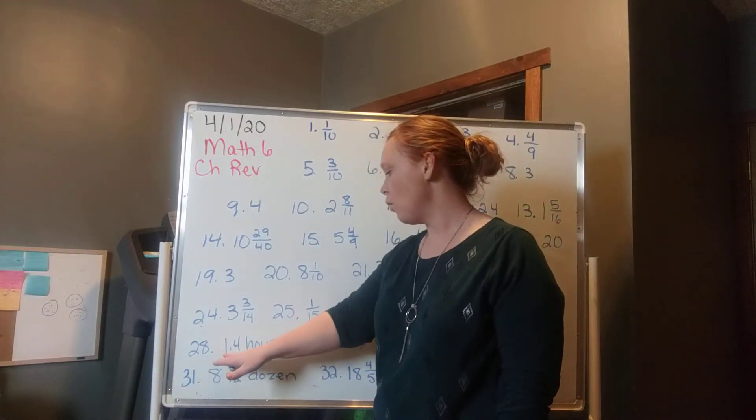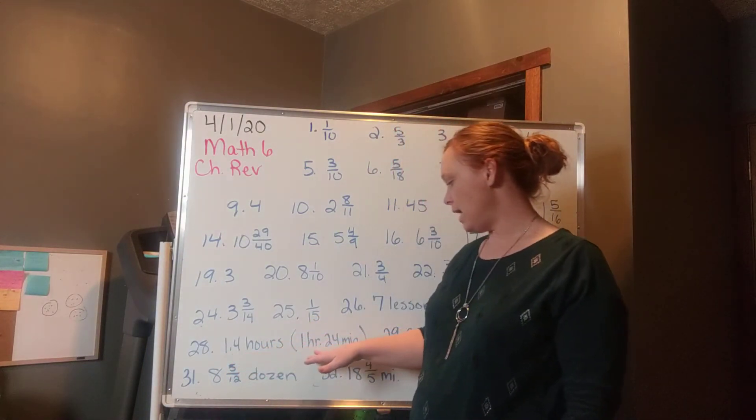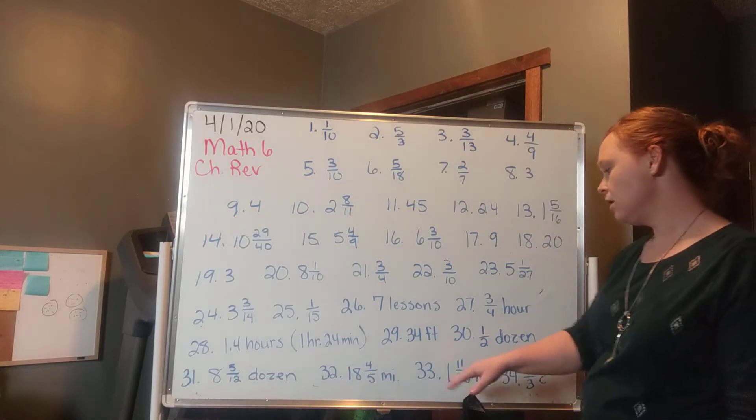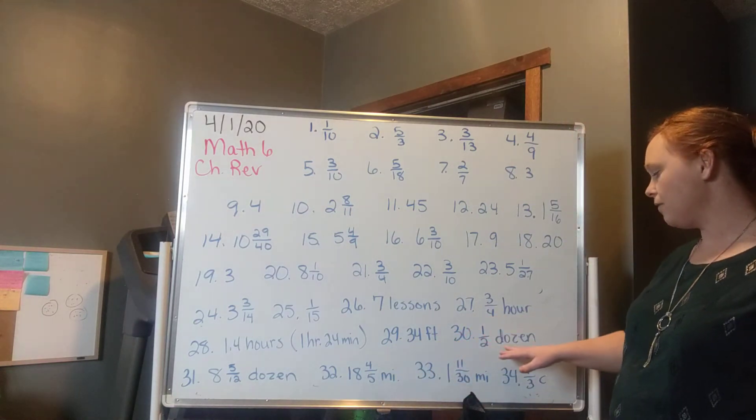Number 28 is 1.4 hours. You could also have 1 hour and 24 minutes. Number 29 is 34 feet. Number 30 is 1 half dozen.